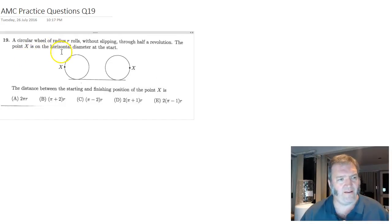A circular wheel of radius R rolls without slipping through half of a revolution. The point X is located on the horizontal diameter at the start. The distance between the starting and finishing position of the point X is.